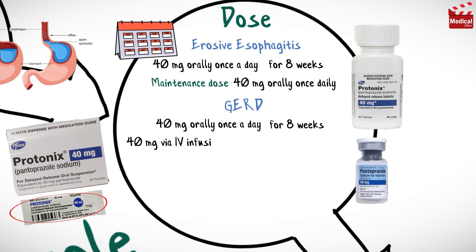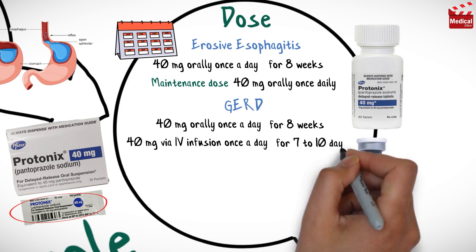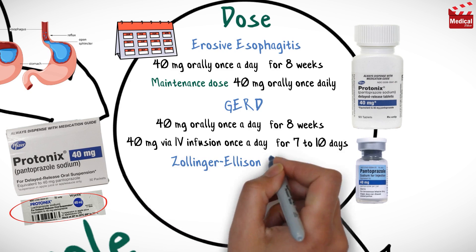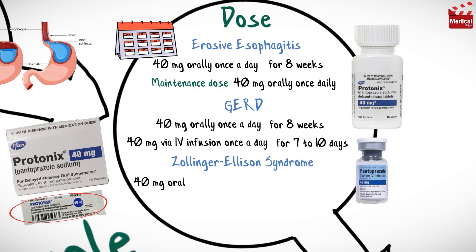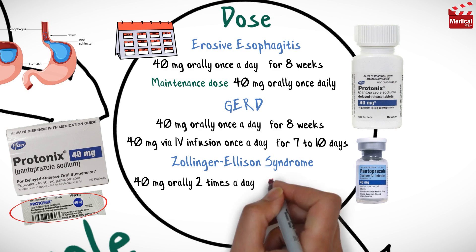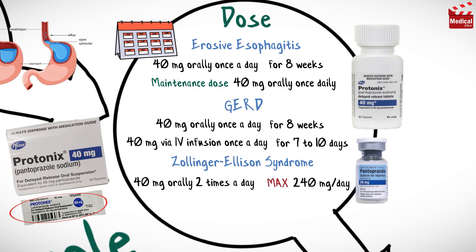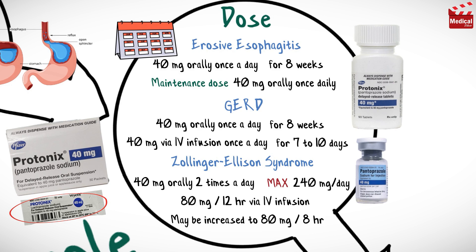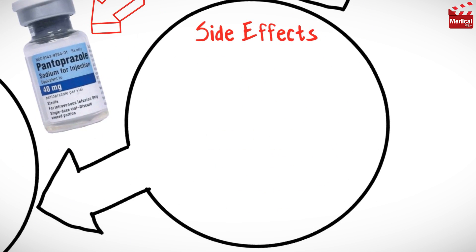When using parenteral preparation, the usual dose is 40 milligrams intravenous infusion once a day for 7 to 10 days. For pathological hypersecretion associated with Zollinger-Ellison syndrome, the usual dose is 40 milligrams twice a day, with a maximum dose of 240 milligrams per day. When using parenteral preparation, the usual dose is 80 milligrams every 12 hours via intravenous infusion, and based on individual patient needs, the dose may be increased to 80 milligrams every 8 hours.